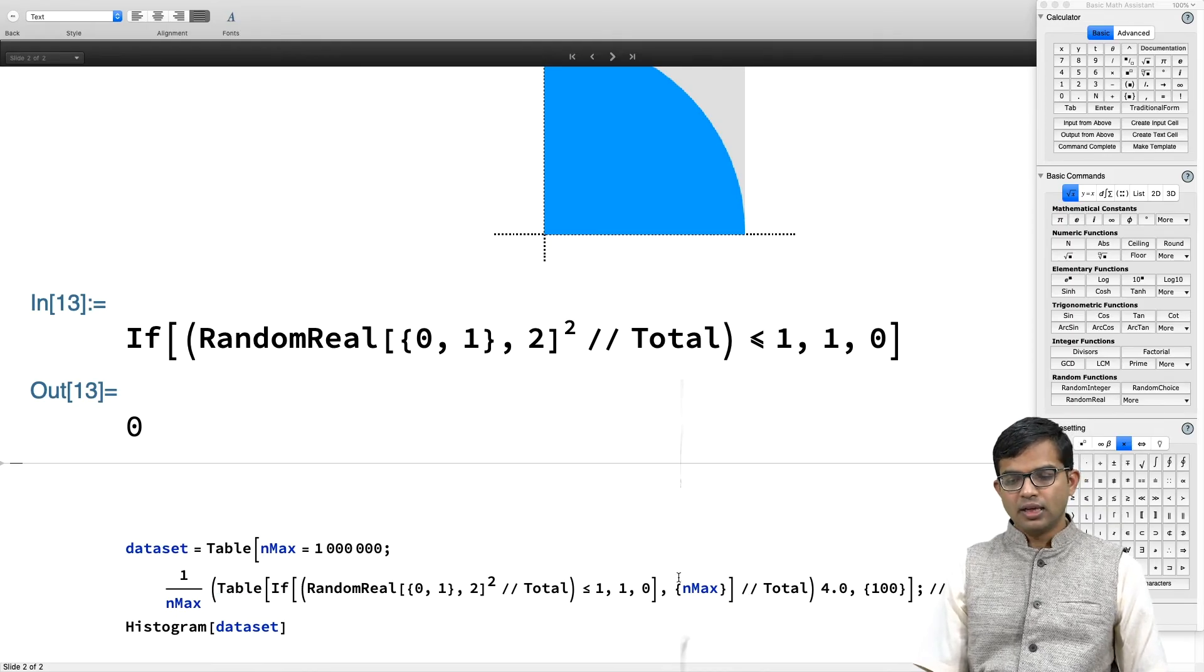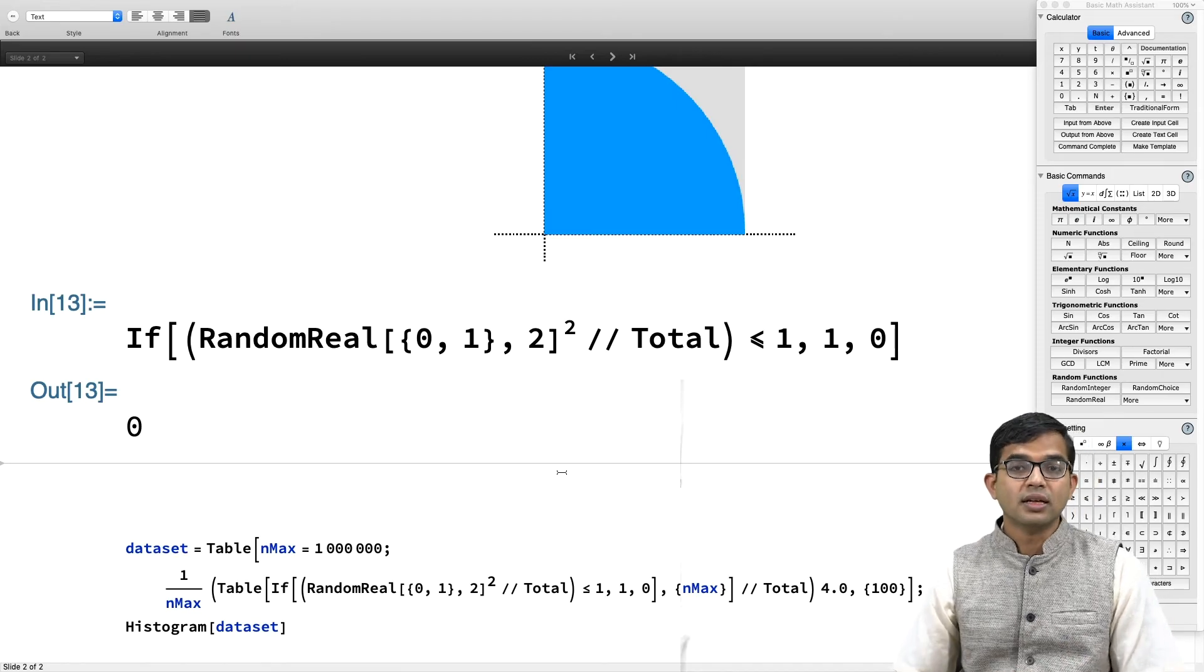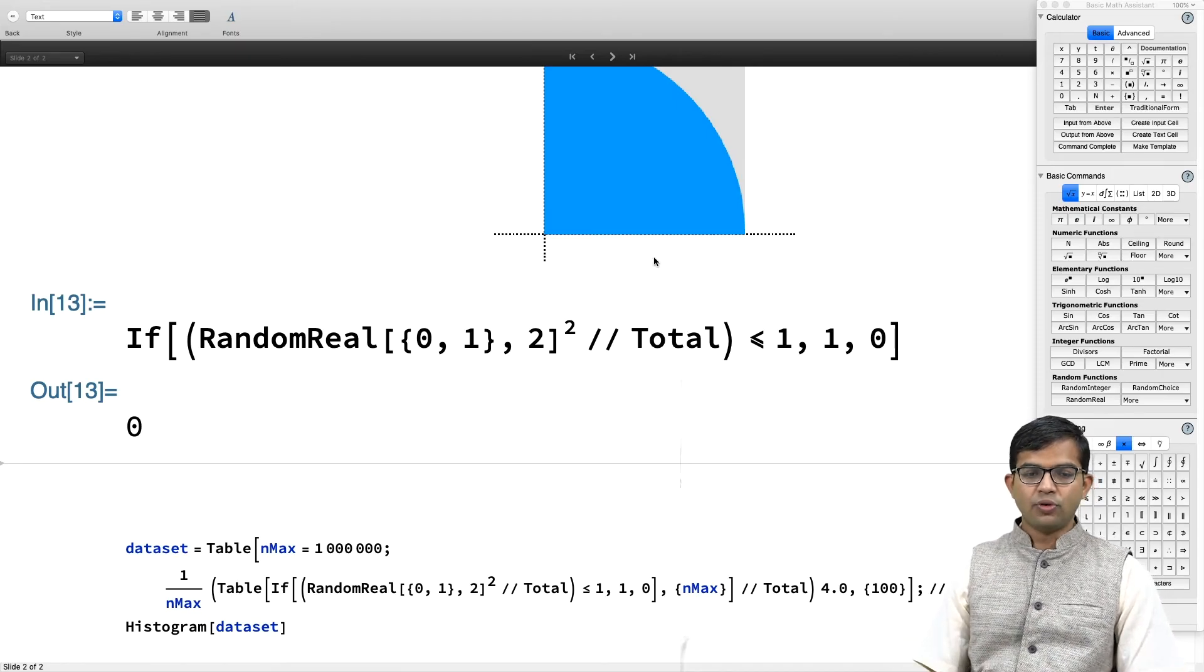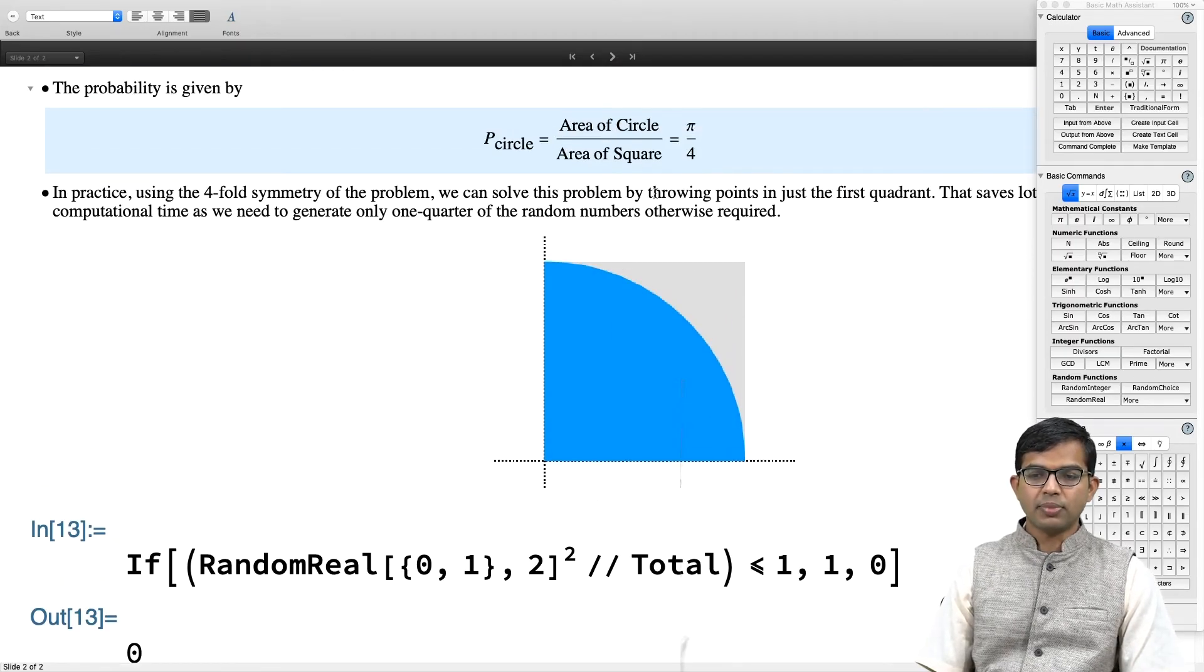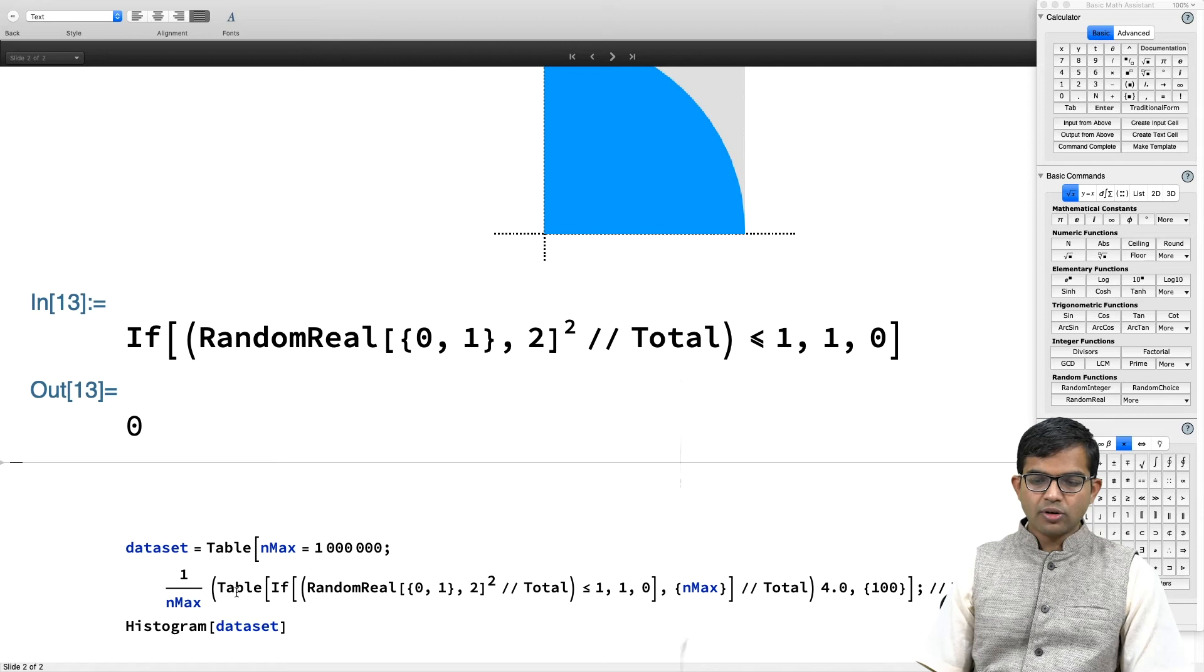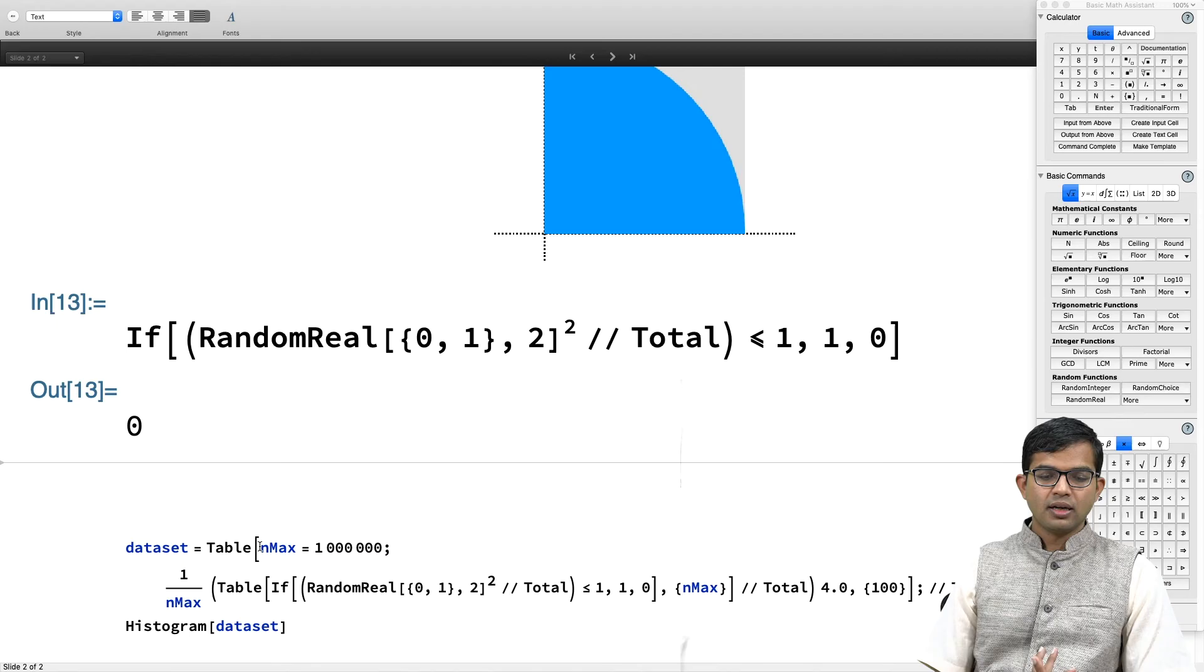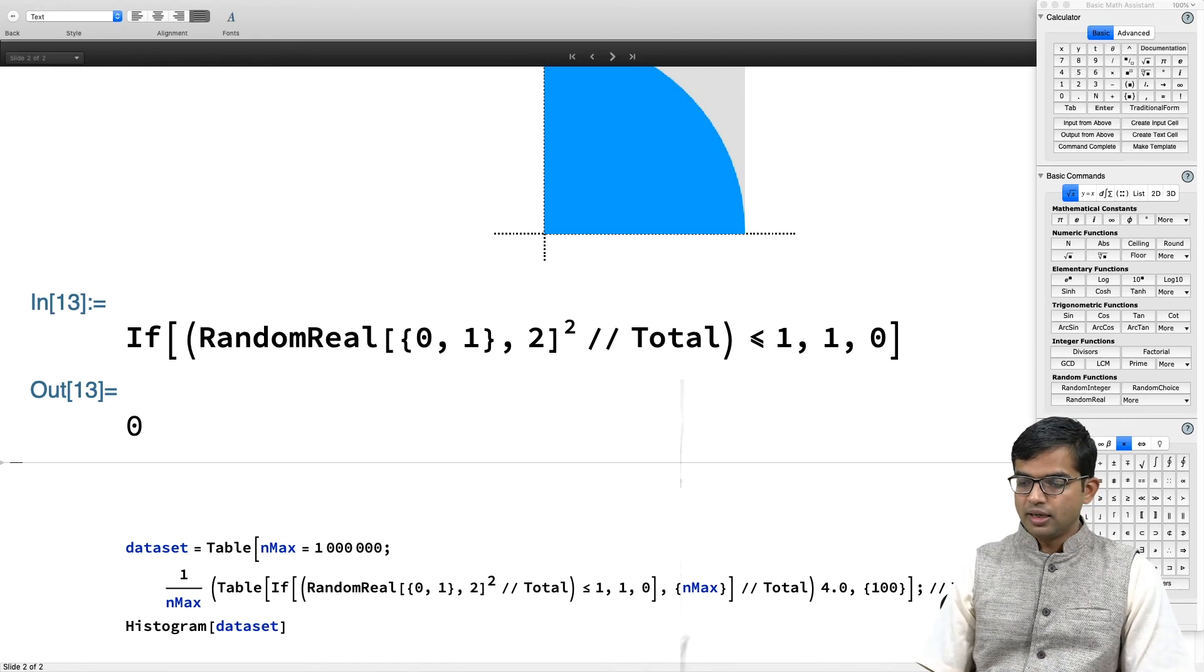You would make a table of this and do it n_max times. Then you count the total. If you sum all this array, it tells you the total number of 1s there. And times 4, because ultimately you have to multiply by 4 - we are interested in pi. Then I have to divide by total number of attempts, which is just n_max. That will create for me another table. I want to generate a large number of these and I will call that dataset.